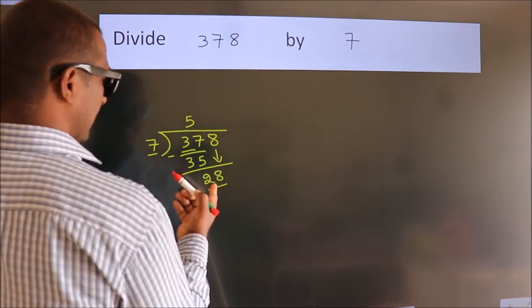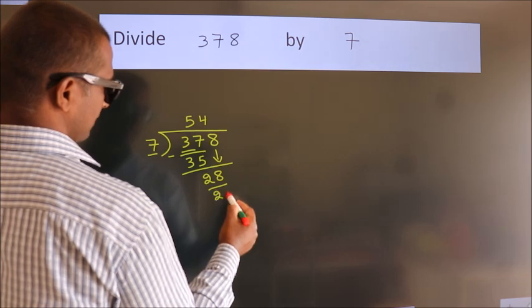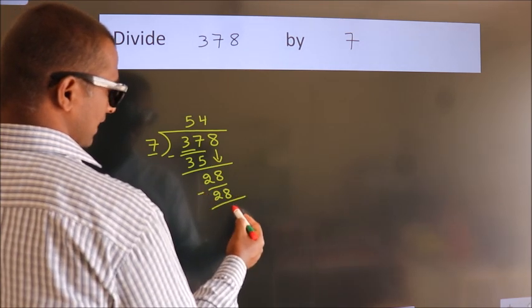When do we get 28? In the 7 table, 7 fours is 28. Now we subtract. We get 0.